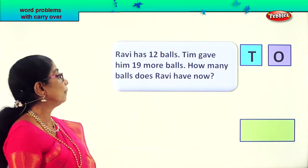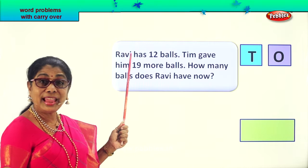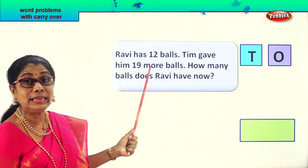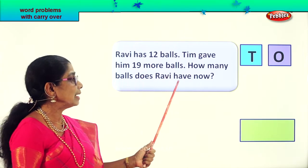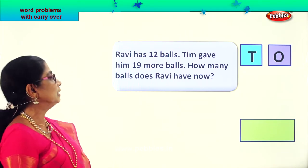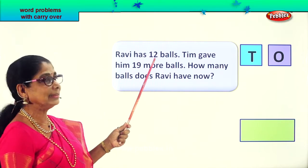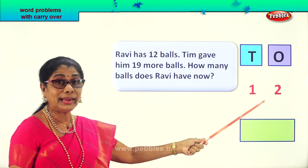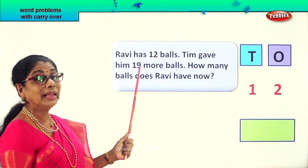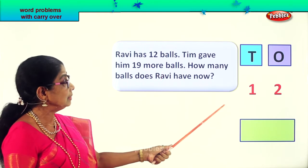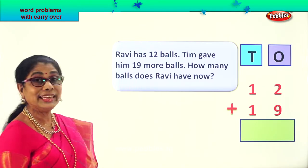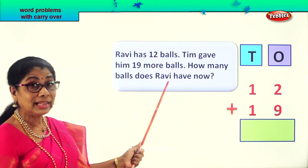Let's look at another problem. First, let's read it. Ravi has twelve balls. Tim gave him nineteen more balls. How many balls does Ravi have now? That's what we are going to find out. Let's put down the numbers first. Ravi has twelve balls — one ten and two ones — so we put down twelve. Tim gave him nineteen more, so we put plus nineteen. Now we arrange them correctly.